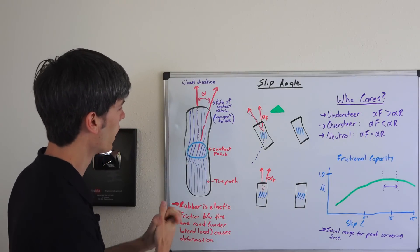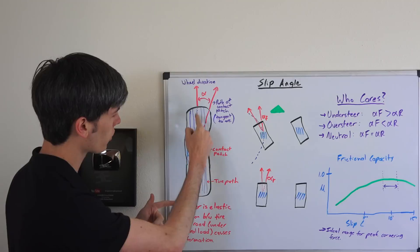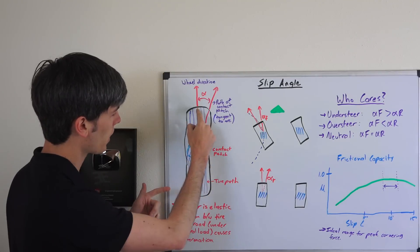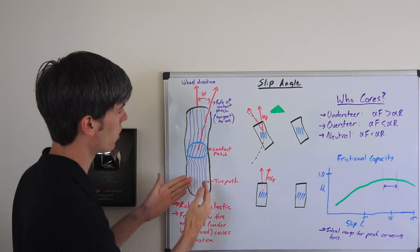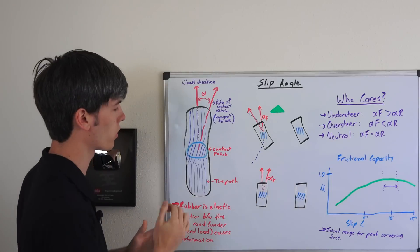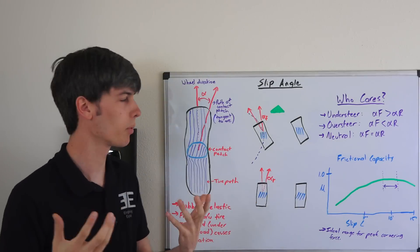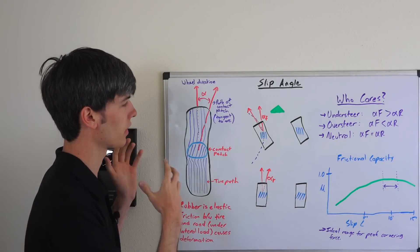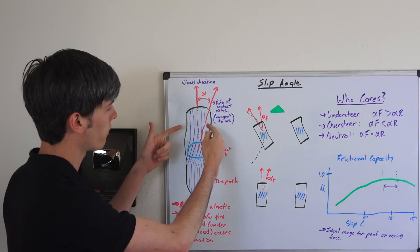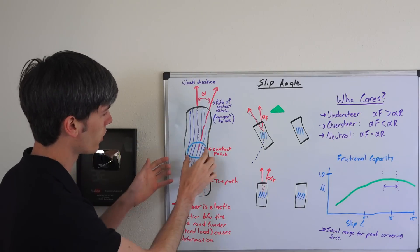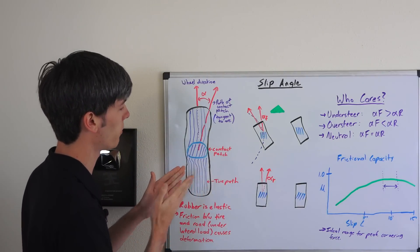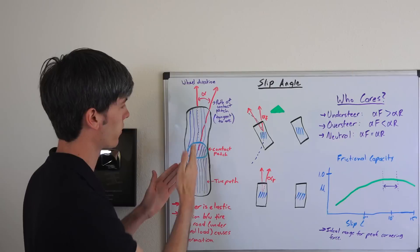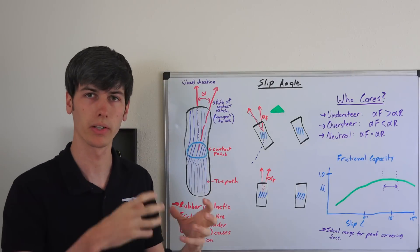You can see there's deformation of the tire path as you roll along and you have a lateral load going around the corner. Because rubber is elastic and you place a lateral load on this vehicle, you're going to have deformation of that rubber. So your contact patch isn't going to be facing the exact same direction as the rest of the tire which isn't experiencing friction.